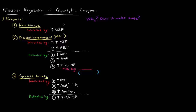In this video, I want to talk about allosteric regulation of the glycolytic enzymes. We talked about the three enzymes that needed to be allosterically regulated in glycolysis: hexokinase, phosphofructokinase 1, and pyruvate kinase. The reason why is because all three of those enzymes catalyze irreversible steps, whereas all the other enzymes in glycolysis can be used to catalyze the reverse step, which is part of the gluconeogenic pathway. So let's go through and see what each one of these allosteric effectors is for these different enzymes.